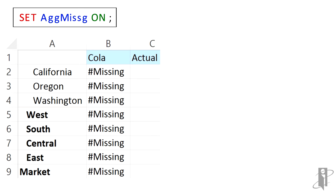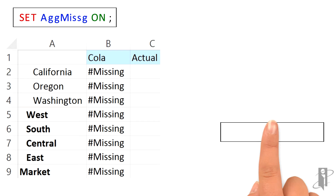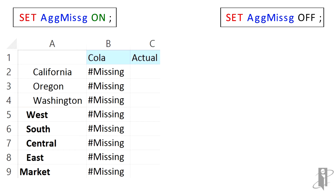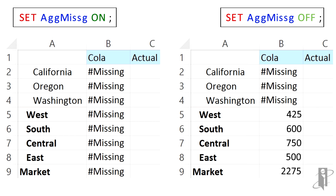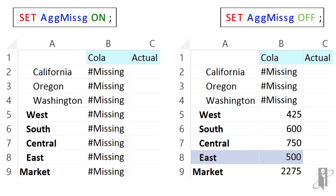But let's say we cleared out all of level zero — not only the states you can see, but also the states beneath south, beneath central, or beneath east. If we set setAggMissing to off, it will actually leave the values at the upper levels. So it will leave west, south, central, east, and total market.